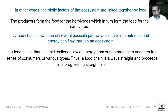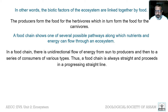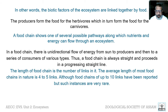In a food chain, there is a unidirectional flow of energy from the sun to producers and then to a series of consumers. The flow of energy is always unidirectional — it flows from the sun to grass, and the grass cannot give back the energy to the sun. From the grass it goes to the grasshopper, and the grasshopper cannot give the energy back to the grass. That is why the food chain always proceeds in a straight line. The length of the food chain is the number of links in it; the average length is 4 to 5 links, though up to 10 links have been reported in rare cases.